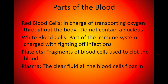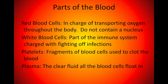You have four different parts of the blood. Red blood cells are in charge of transporting oxygen throughout the body — they do not contain a nucleus, which is why they're usually drawn like that flat donut shape. White blood cells are part of the immune system and are charged with fighting off infections. Platelets are fragments of blood cells used to clot the blood. And plasma is the clear fluid that all the blood cells float in.